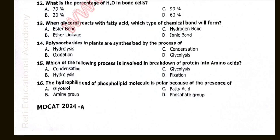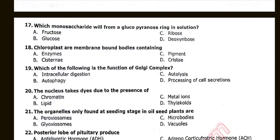Question number sixteen: The hydrophilic end of phospholipid molecules is polar because of the presence of. The correct option is D: Phosphate group. Question number seventeen: Which monosaccharide will form a glucopyranose ring in solution? The correct answer is B: Glucose. Question number eighteen: Chloroplasts are membrane-bound bodies containing. As per the official answer keys, the answer key is deleted; however, enzymes could be the correct answer.